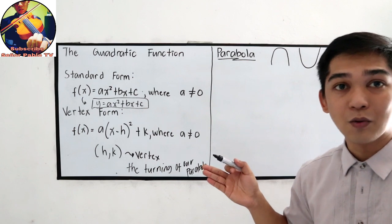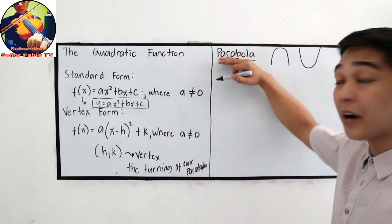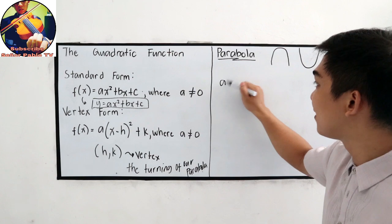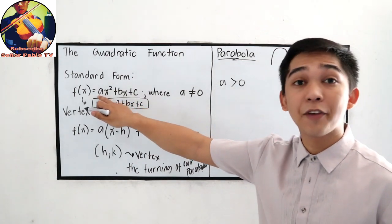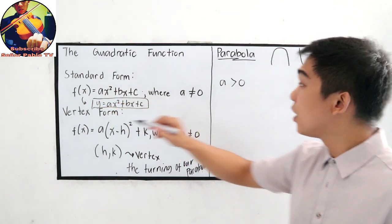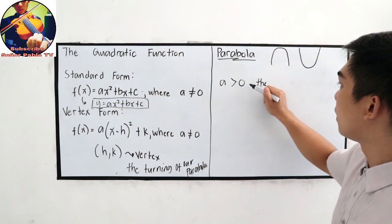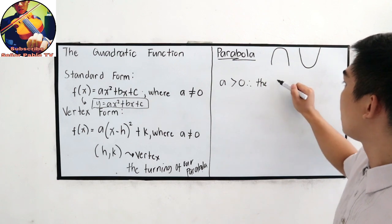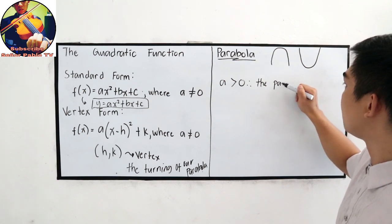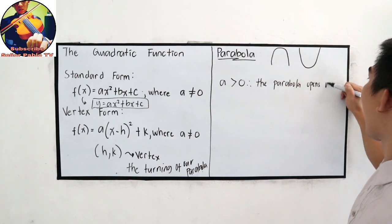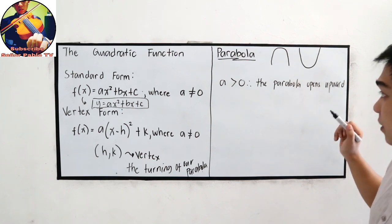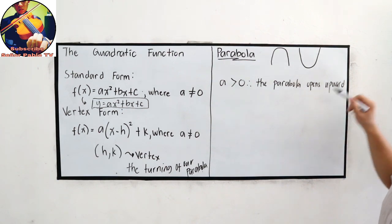And we can determine the opening of the parabola. So if a is greater than 0, that means the value of a is positive. Therefore, the parabola opens upward in upward direction. So our curve opens upward in this case.